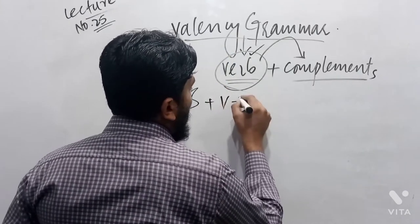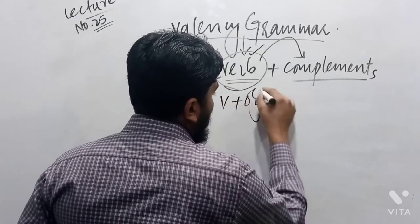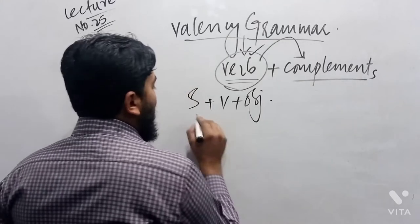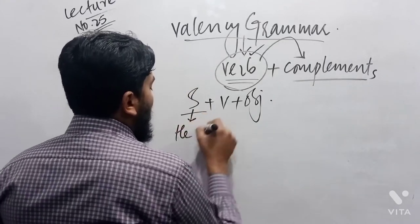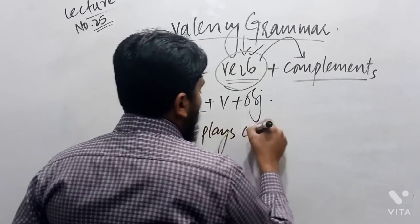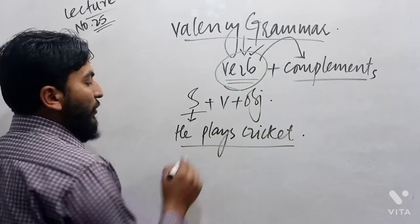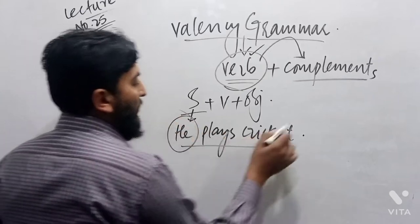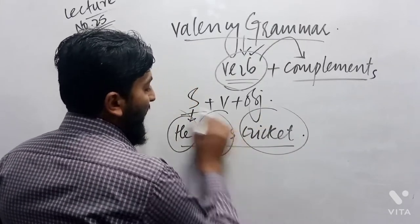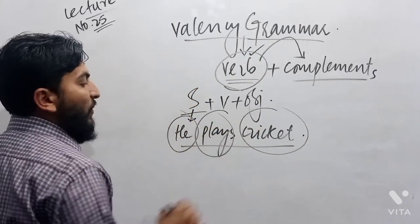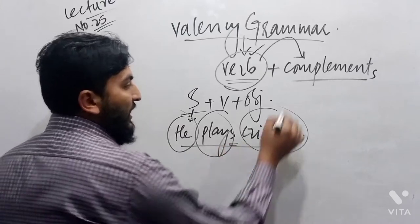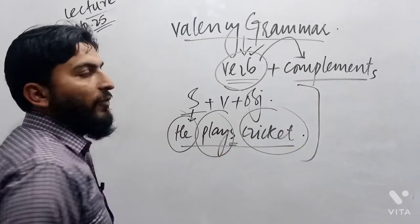For example, subject plus verb plus object. This shows that subject is he plays cricket. Understanding this very sentence, I should understand what is he, what is cricket and how this verb is used and why there is S. Understanding this very structure is the work of Valency grammar.